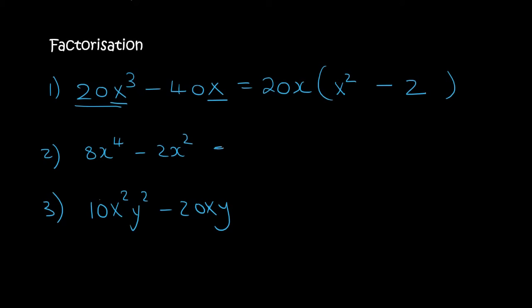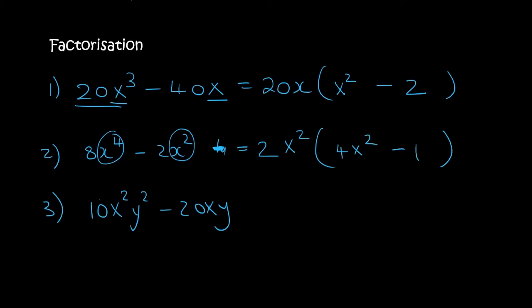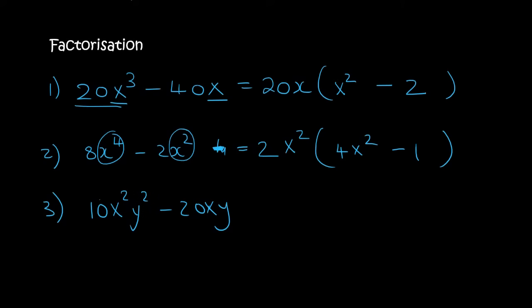The next one: the largest number in common between 8 and 2 is 2. This one has two x's, this one has four, so they have at least two in common. We will then be left with 4x² minus 1. Now, if any of you are watching this for revision, you will already know a factorizing method called difference of squares, and technically this one could go further. But I'm going to pretend you are just getting started with factorizing, so I won't go further with that one for now.